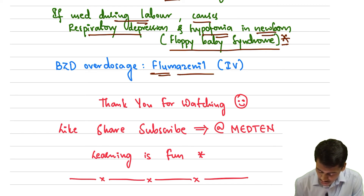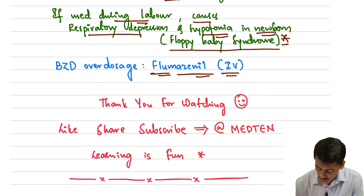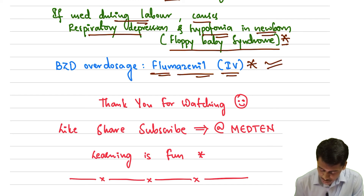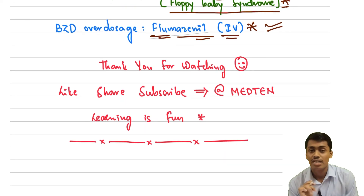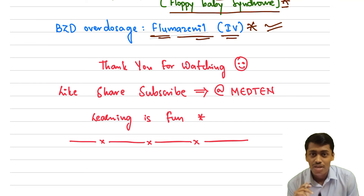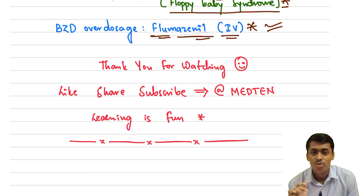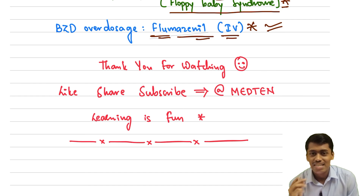Benzodiazepine overdoses can be reversed with flumazenil IV, which counteracts all the effects of benzodiazepine overdose. Thank you for watching — make sure you like, share, and subscribe, and share it with friends who want to learn more about pharmacology. See you in the next video!